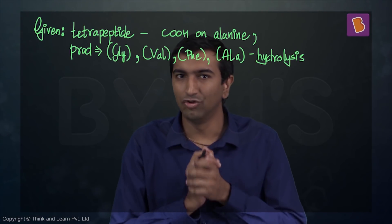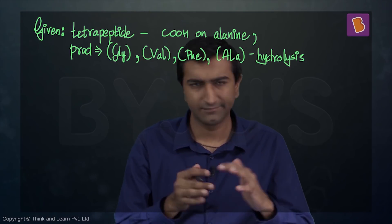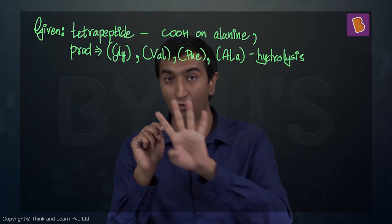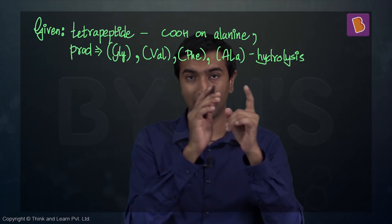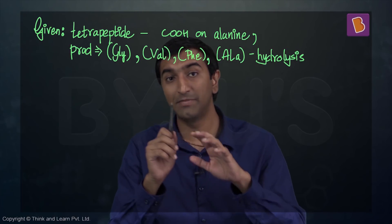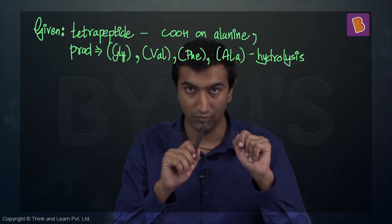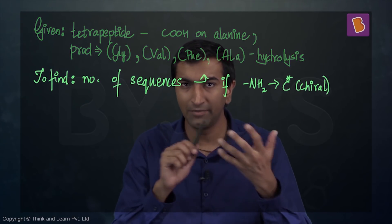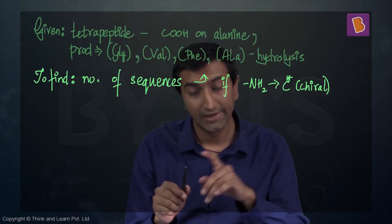You have a tetrapeptide given to you over here. This tetrapeptide is made up of these four different amino acids that are given to us. The conditions are that alanine must be at the terminal COH, and we're asked to figure out how many combinations you could have of these four.